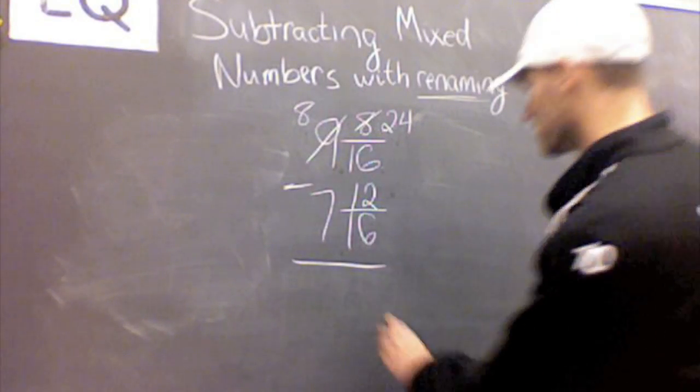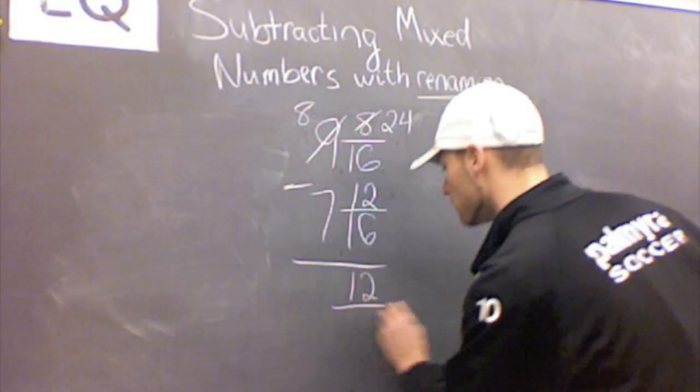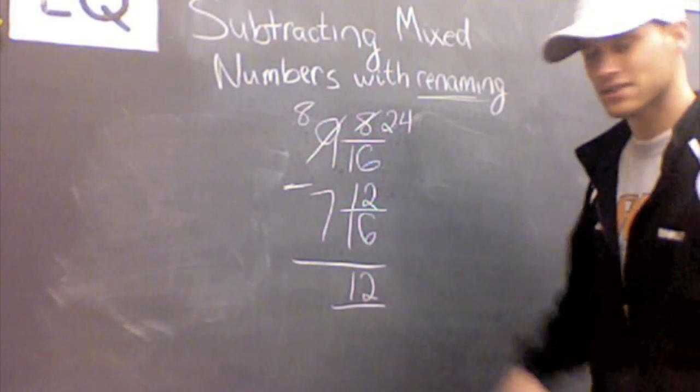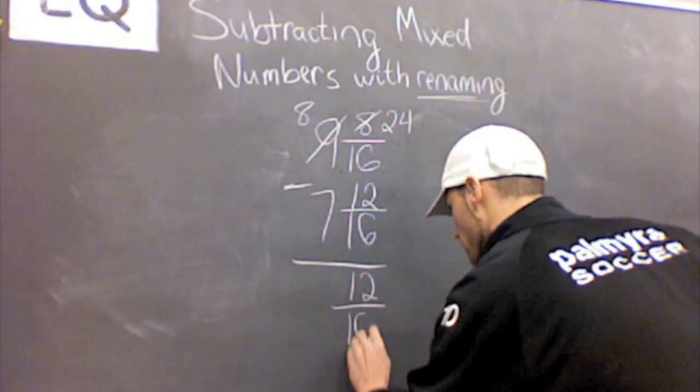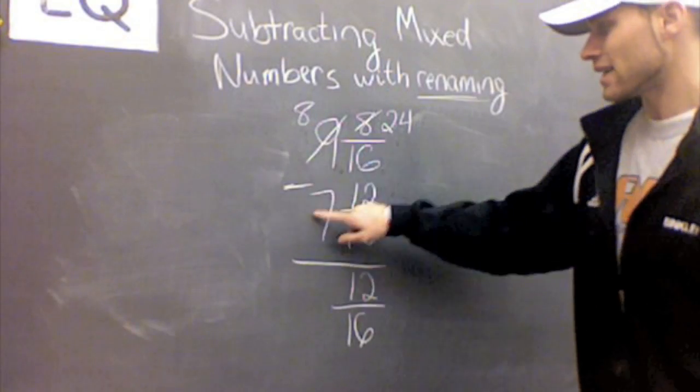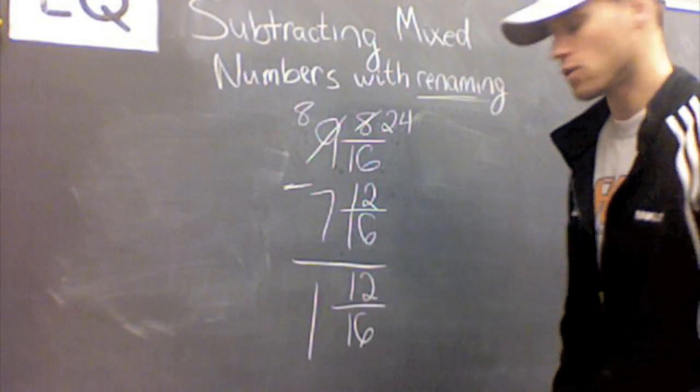24 minus 12 is 12, and we keep the denominator the same, so that's just going to stay 16. 8 minus 7 is 1, so my whole number is 1.